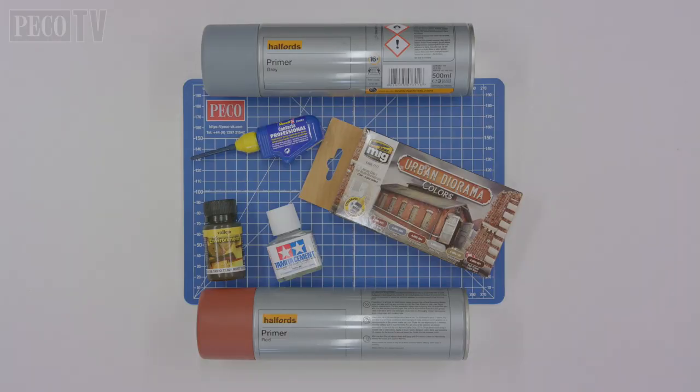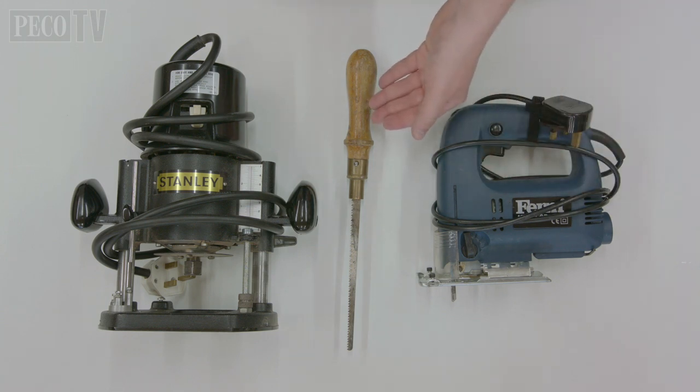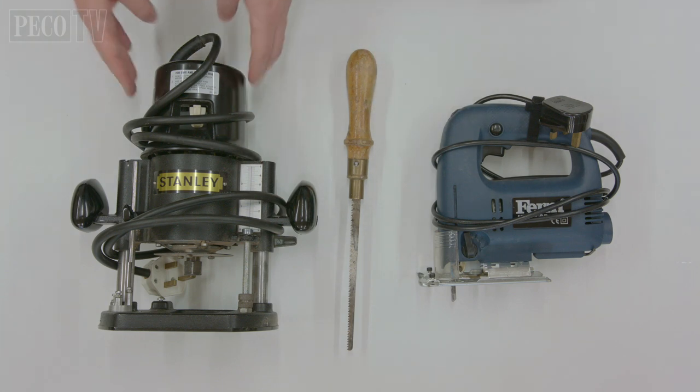You will also require liquid poly cement and an array of paints and weathering colors of your choice. To cut the hole in your baseboard, you will also require either a jigsaw, a pathsaw, or as we'll be using, a router.